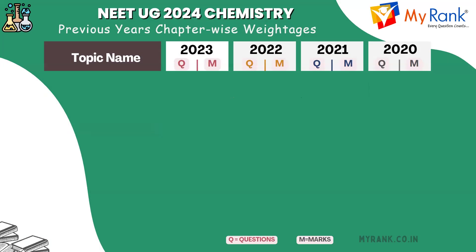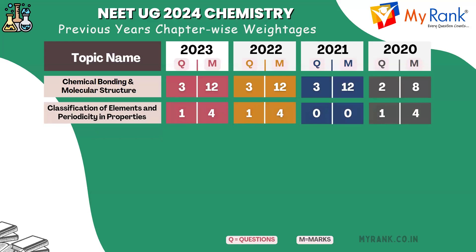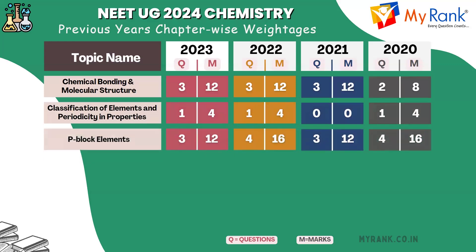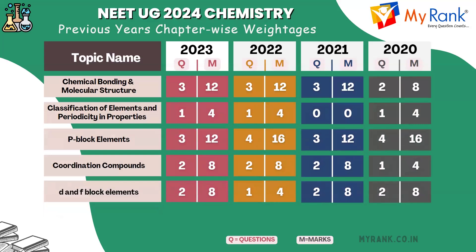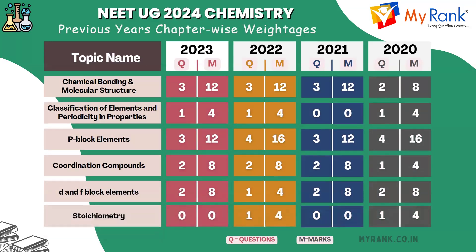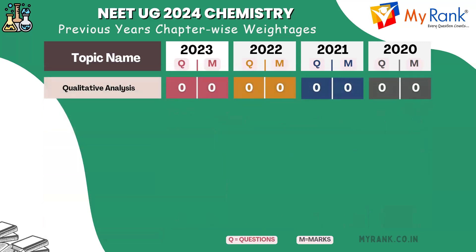The topics include: Chemical Bonding and Molecular Structure, Classification of Elements and Periodicity in Properties, P-Block Elements, Coordination Compounds, D and F-Block Elements, and Stoichiometry.